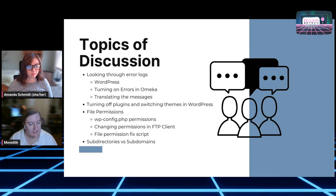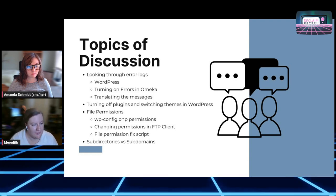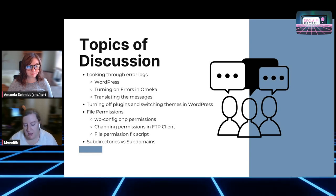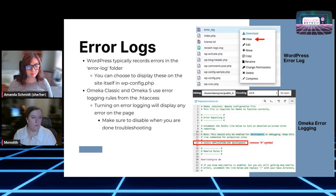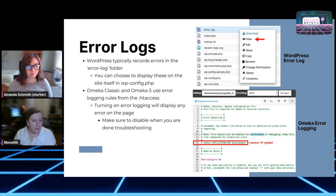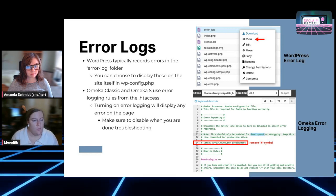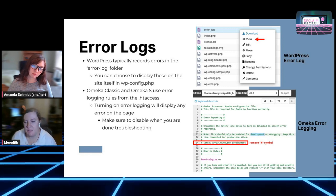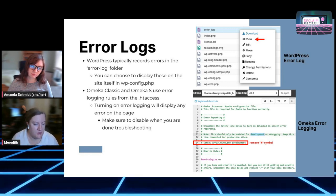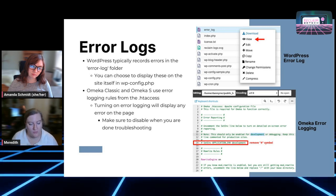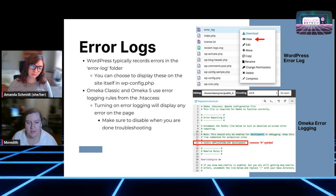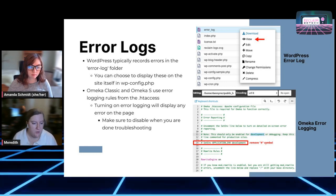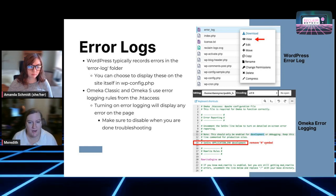We'll also look at account organization to help prevent any errors in the future through subdomains and subdirectories. Looking at error logs in WordPress first: WordPress typically records errors within the error log file within the site directories themselves. This happens automatically whether it be a PHP warning or a failed plugin update.